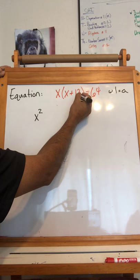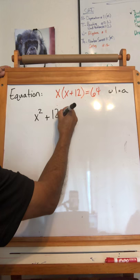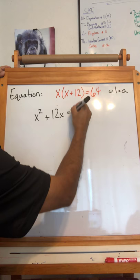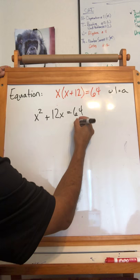So x squared plus 12x equals 64, and my last step is to set this to 0. So to do that I have to subtract 64 on both sides.